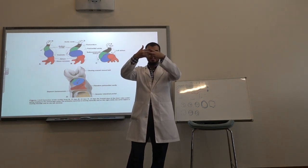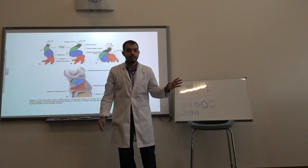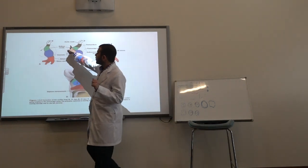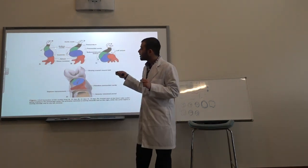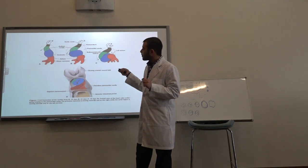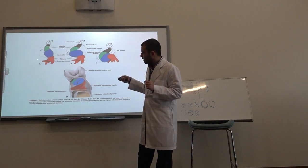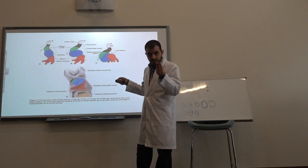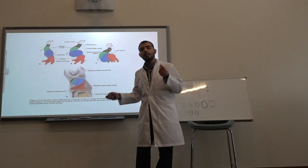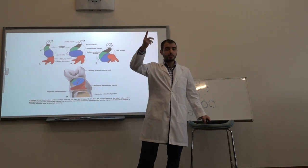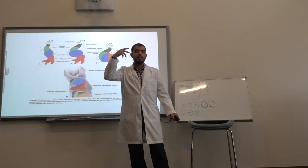Now let's name these four dilations. The upper dilation is the bulbus cordis, colored in black and green. Under it is the ventricle. The third dilation is the atrium, colored in red. And the fourth dilation at the bottom is the sinus venosus, also colored in red. So from cranial to caudal: bulbus cordis, ventricle, atrium, sinus venosus.